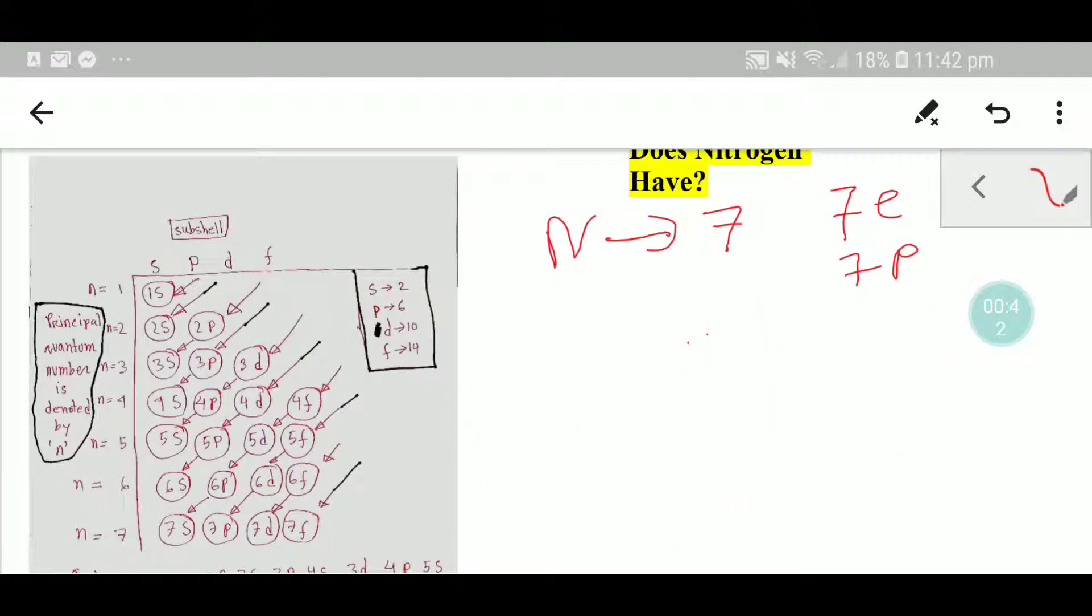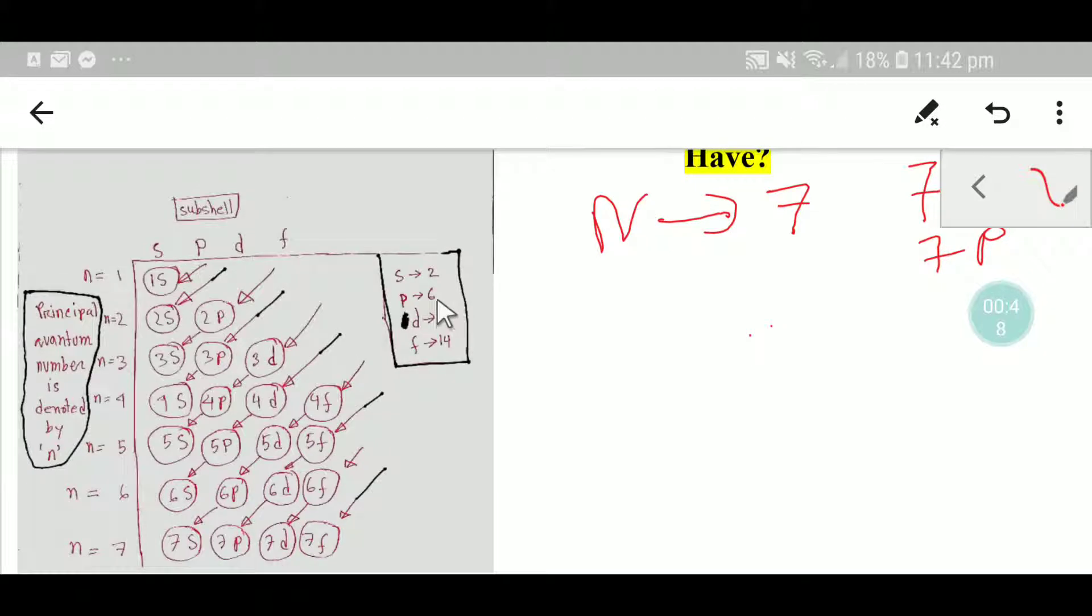In the second step we'll do the electronic configuration of nitrogen using the Aufbau principle. We have seven electrons. The first two electrons will go into 1s2, the next two electrons will go to 2s orbital, and the rest of the electrons will go into 2p orbital.